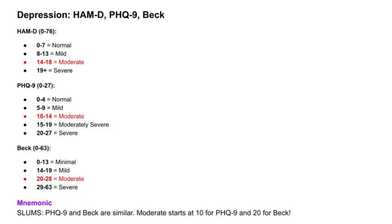First up, the Hamilton Depression Rating Scale, or HAM-D. This clinician-administered tool scores from 0 to 76. 0 to 7 is considered normal, meaning minimal to no symptoms.